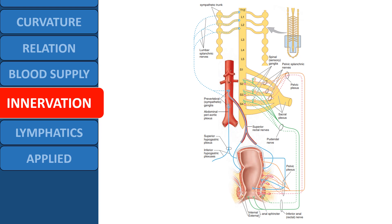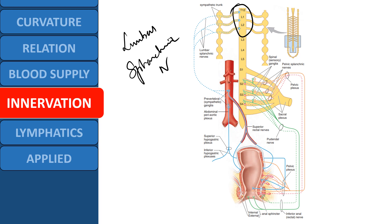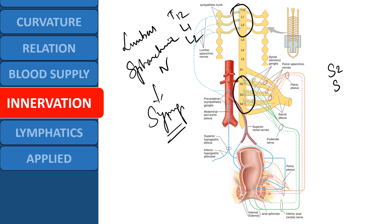Coming to the innervation, the rectum is a visceral organ predominantly innervated by sympathetic and parasympathetic nerves. The lumbar splanchnic nerves, arising from T12, L1, and L2, provide the sympathetic supply to the rectum. The pelvic splanchnic nerves, arising from S2, S3, and S4, provide the parasympathetic supply.